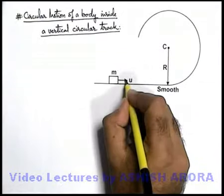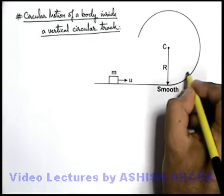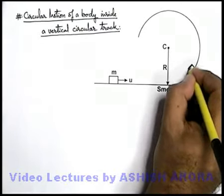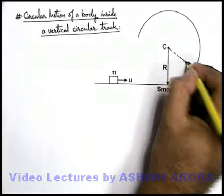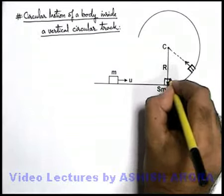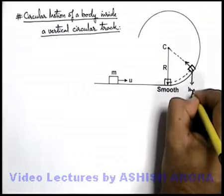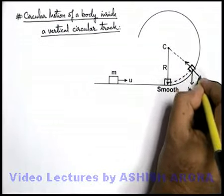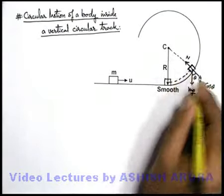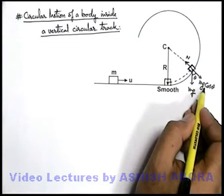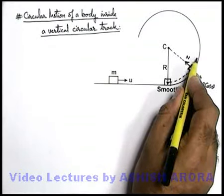When the block reaches the curved part and starts going up, the normal reaction acting on it will be in the radially inward direction. As the block goes up, it experiences its weight in the downward direction, and a component of weight acting on it will be mg cosθ. So N minus mg cosθ will provide the necessary centripetal force on the block for its circular motion.